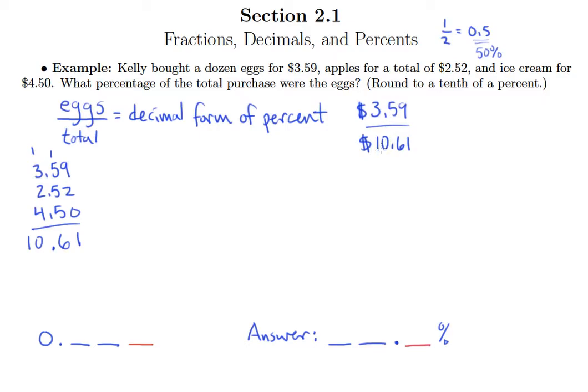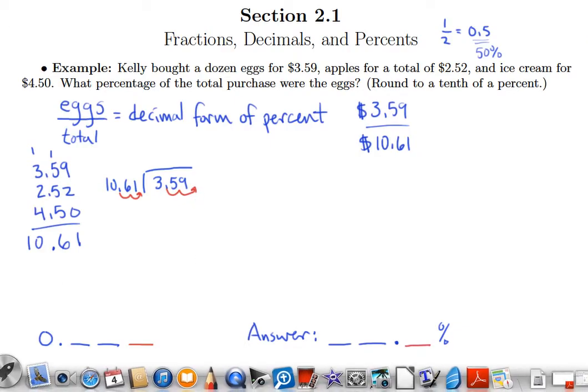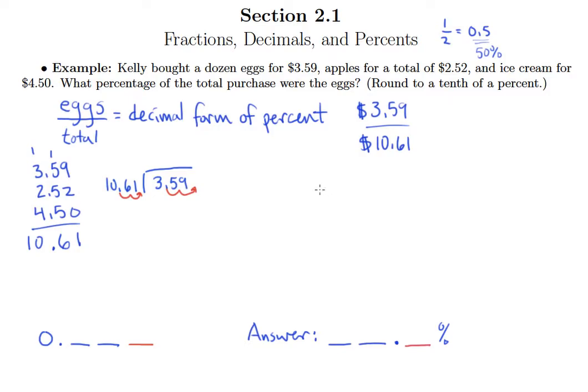So let's keep that in mind as we proceed. We're going to take $3.59 divided by $10.61. But remember that when you are dividing by a decimal, you can't leave the decimal point in the divisor. So you move it two places to the right in both numbers. So the division problem that we really have here is 359 divided by 1061. Now 1061 does not go into 359, so I'm going to put a zero up here.